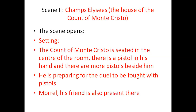Now let us come to Scene Number Two, page number 18. The Count of Monte Cristo is seated in the center of the room with a pistol in his hand and more pistols beside him. From time to time he turns sideways to fire at an unseen target, reloads a pistol, and his friend Morel watches each shot as it goes to its mark. Monte Cristo is preparing for the duel to be fought with pistols.